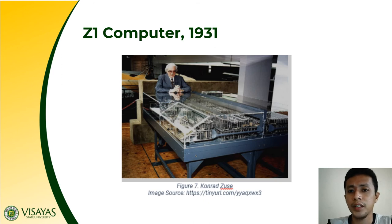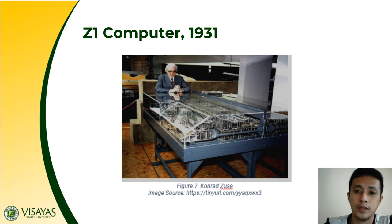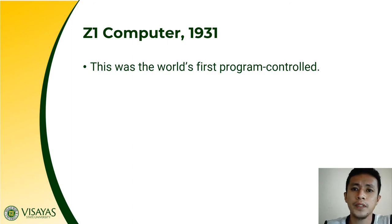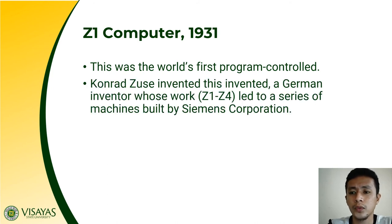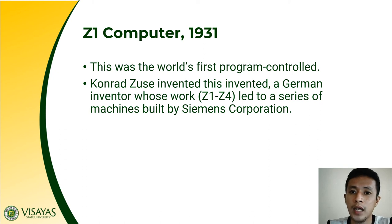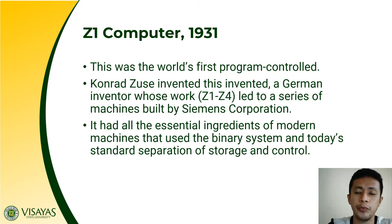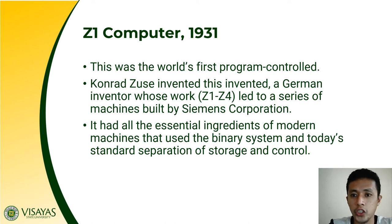In the year 1931, the Z1 computer was developed, invented by Conrad Zuse. The Z1 was the first program-controlled computer in the world. Conrad Zuse was a German inventor whose work led to a series of machines built by Simons Corporation, starting with Z1 and ending with Z4 — a series of improvements. It has essential ingredients of modern machines, using the binary system and today's standard separation of storage and control.